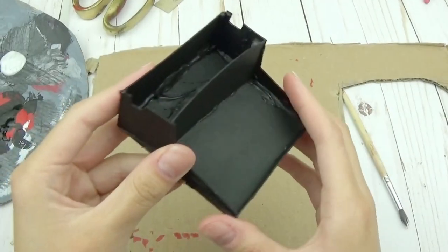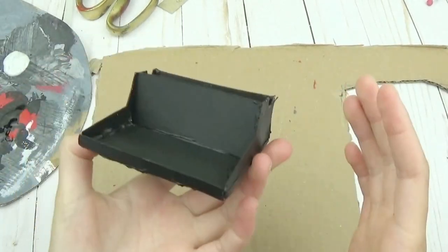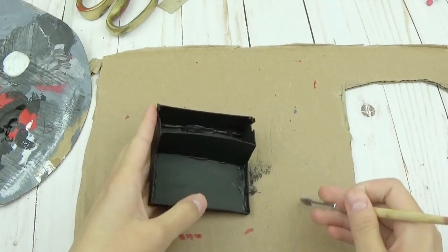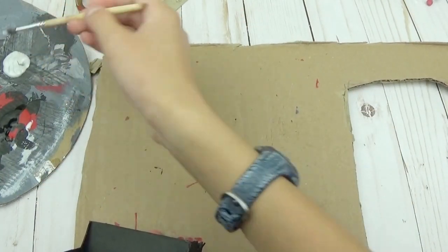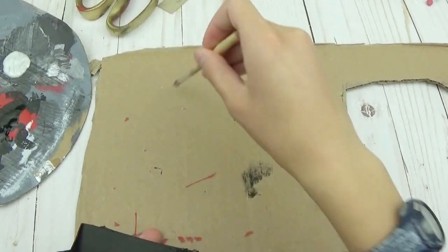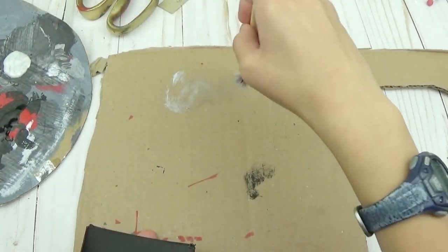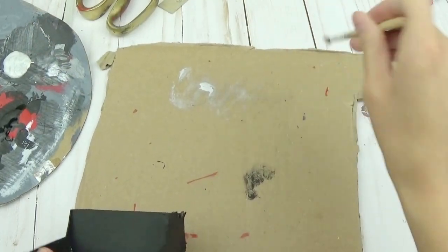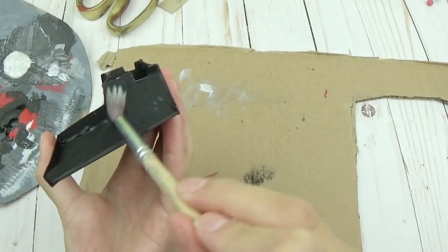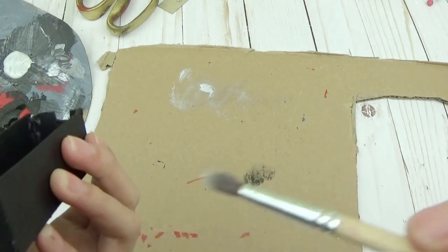Once you have a nice even black coat of paint on your typewriter, you're going to dry brush a little bit of silver paint. What dry brushing is is where you get a little bit of paint on your paintbrush, just a tiny bit, and swirl it around. Then you basically just lightly dust it onto there and it makes it look old-fashioned.